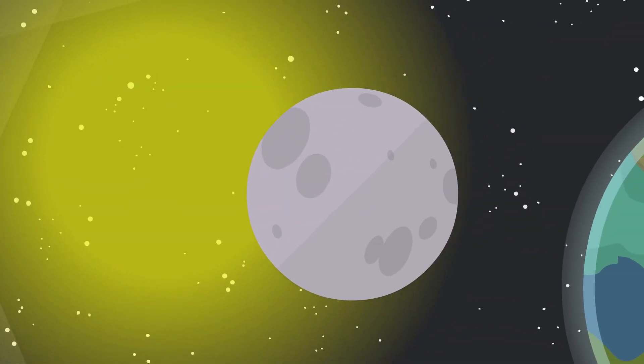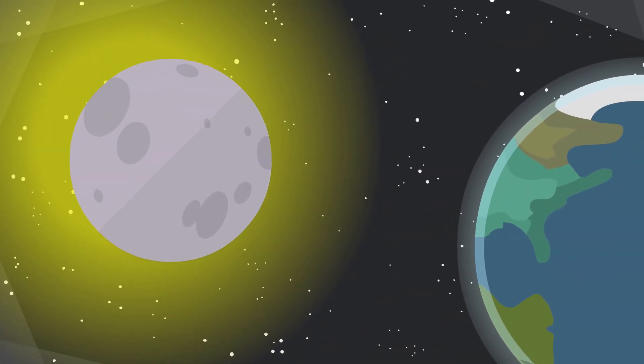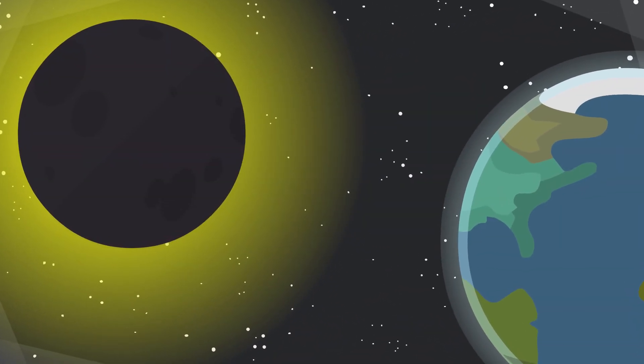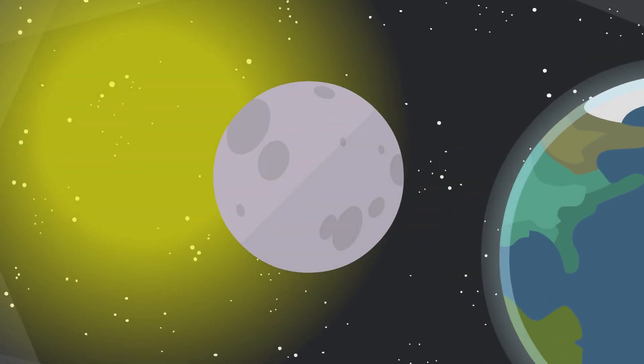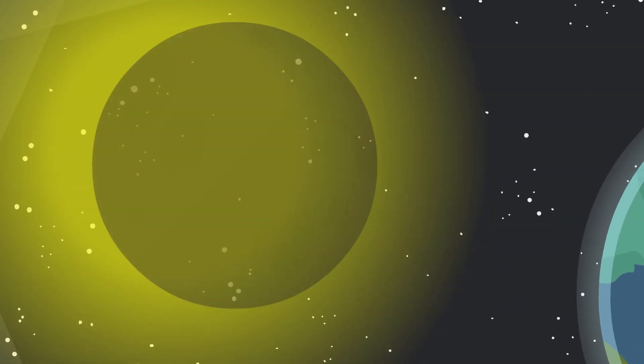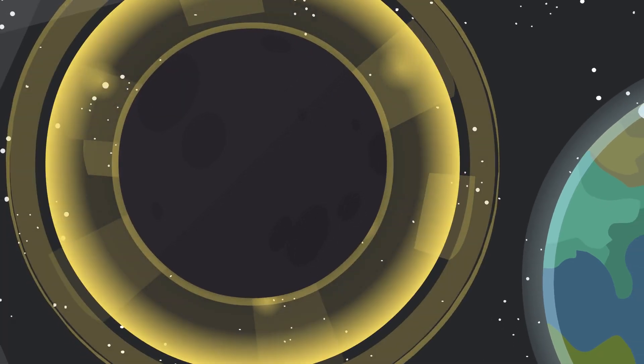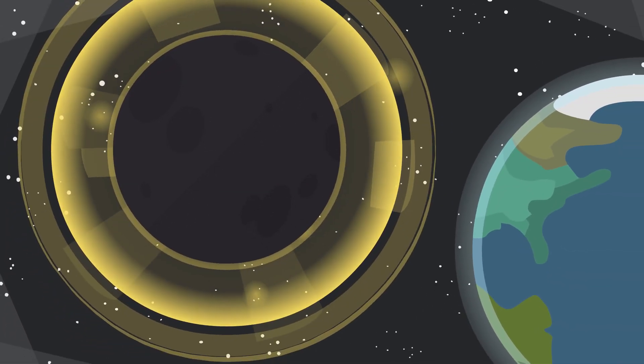Total solar eclipses happen when the moon completely covers the sun, turning day into night for a short time. Partial eclipses occur when only a part of the sun is covered, and annular eclipses create a ring-like effect in the sky.